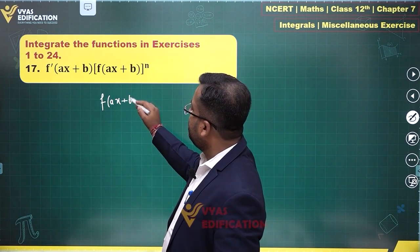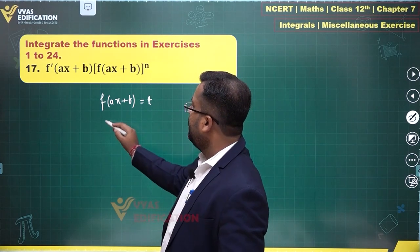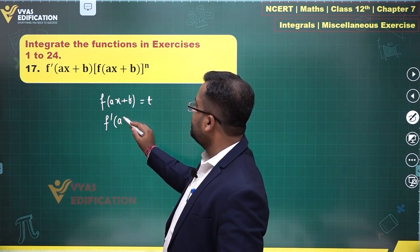I can substitute f of ax plus b is equal to t. What I'll get is f prime ax plus b